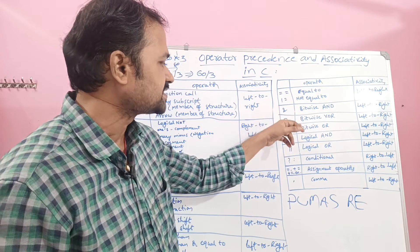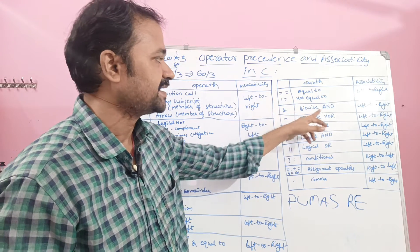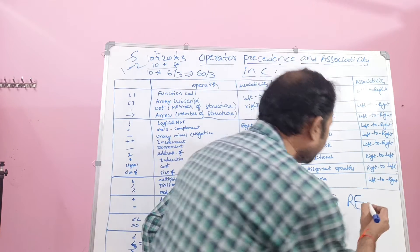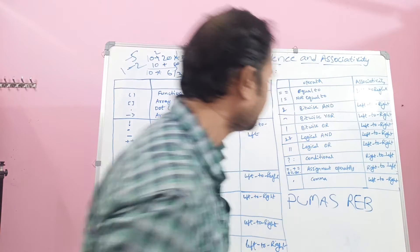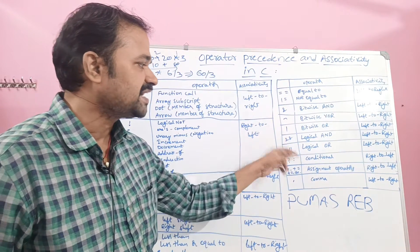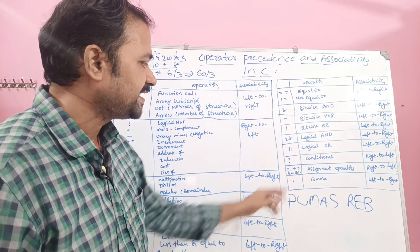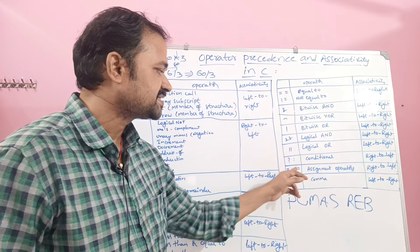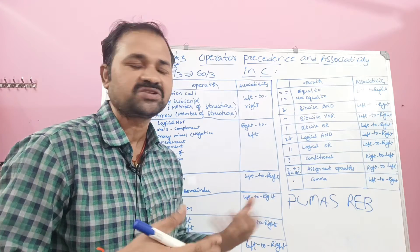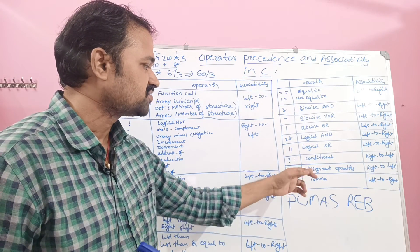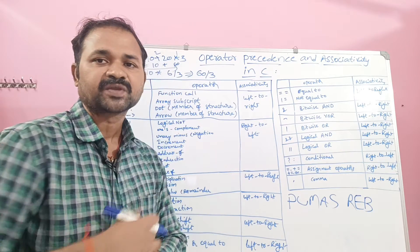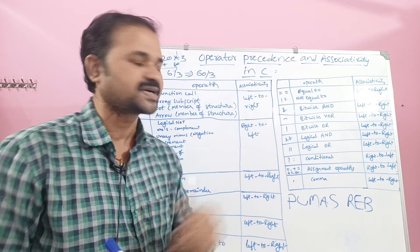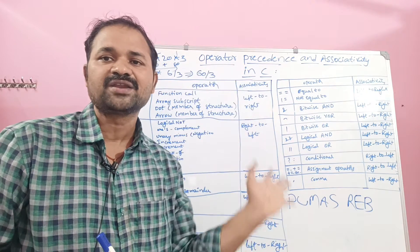Next one is bitwise operators — bitwise AND, bitwise XOR, and bitwise OR — denoted as B. After that come logical AND and logical OR operators. Then we have the conditional operator (question mark colon). Next is the assignment operator — equals, plus-equals, minus-equals, star-equals, and so on. Finally, the comma operator, which has the lowest priority. Except for unary, conditional, and assignment operators, the associativity for all remaining operators is from left to right.